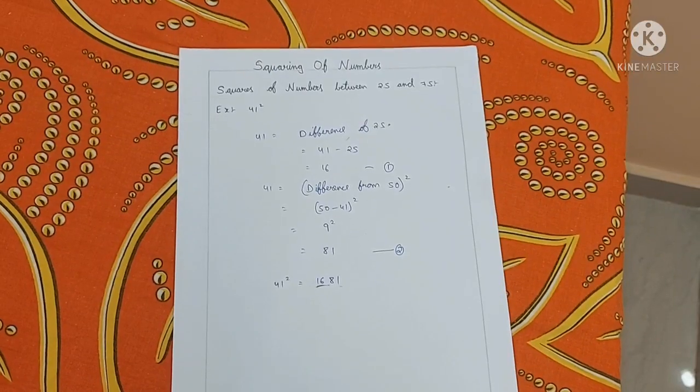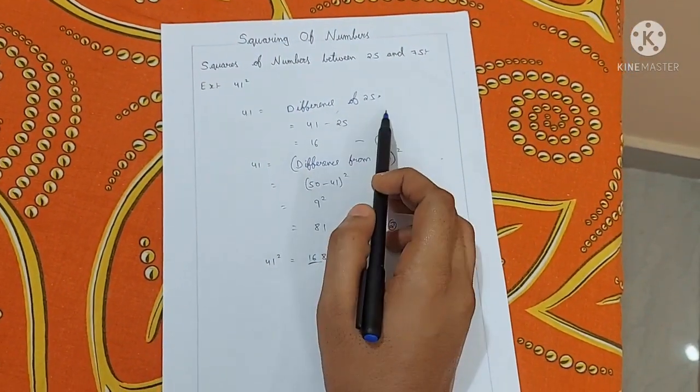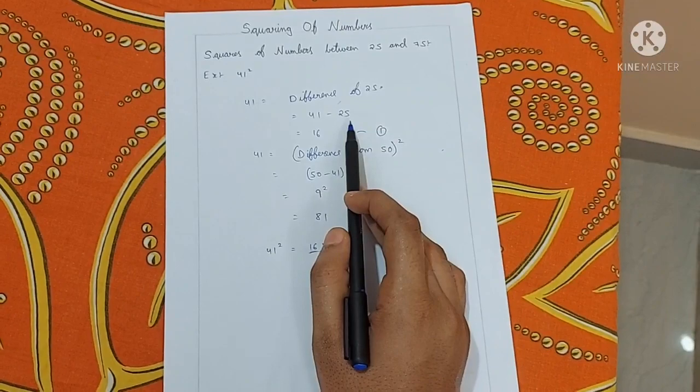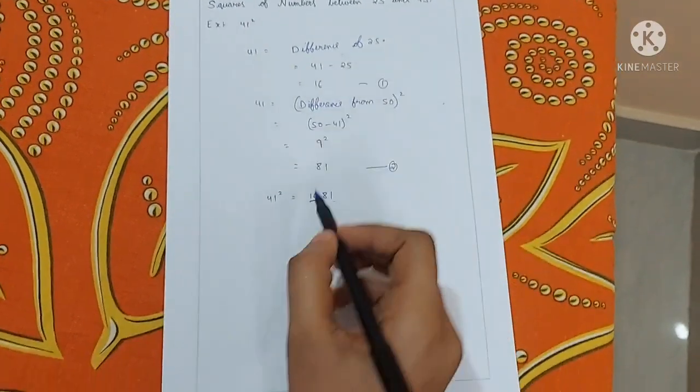let's take an example as 41 square. The first step is take the difference from 25. That is 41 minus 25 gives 16. Write it as the first number.